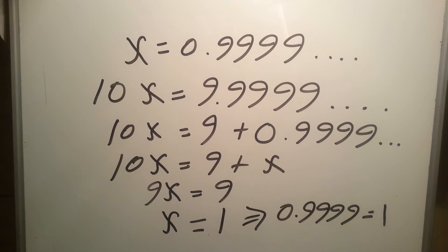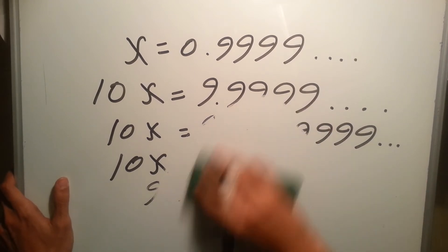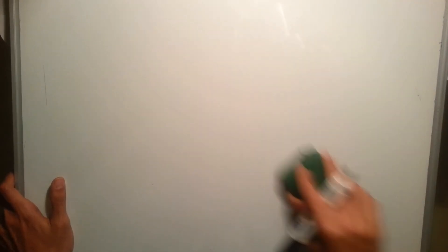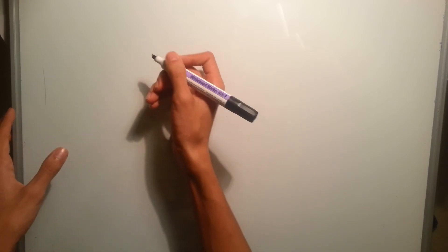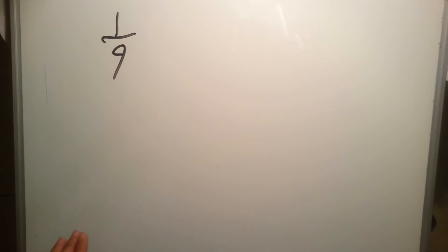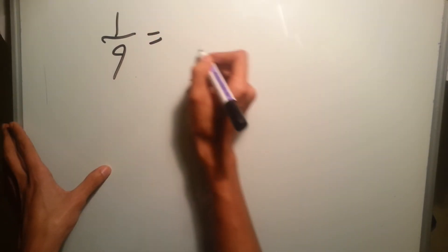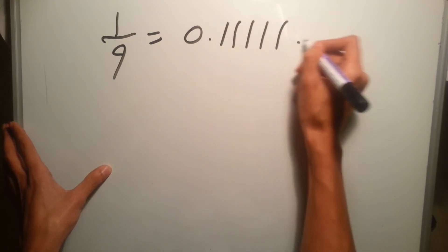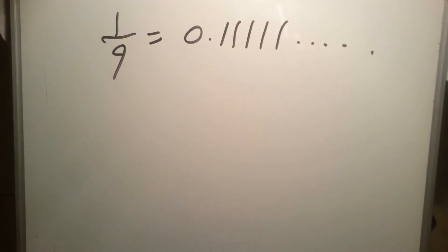So this is the first proof which is very easy. The other proof, which can be performed in different ways, I'll show you two of them. Basically you just take a fractional number. Let's say we take 1 over 9. If you use your calculator, you'll find that it's equal to 0.111111 up to infinity.